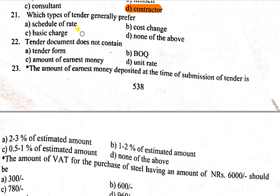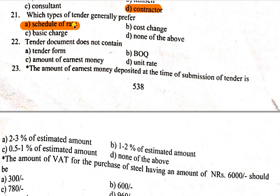Question number 20/21: Which type of tender is generally preferred? In Nepal, what type of tender is generally preferred? The options are: Schedule of Rate, Cost Change, Basic Change, and None of the Above. The Schedule of Rate type of tender is preferred. The tender document does not contain what we have to publish — it contains a tender form.